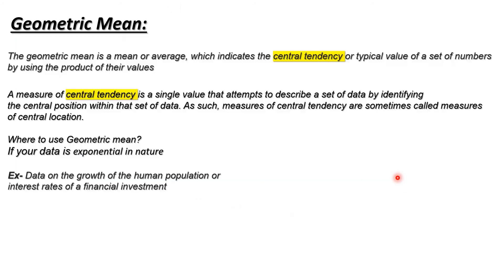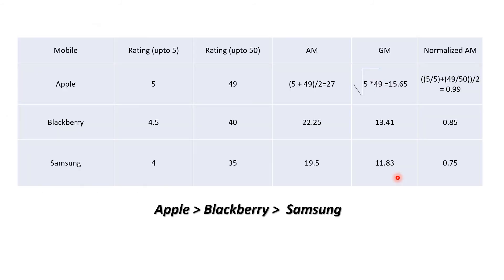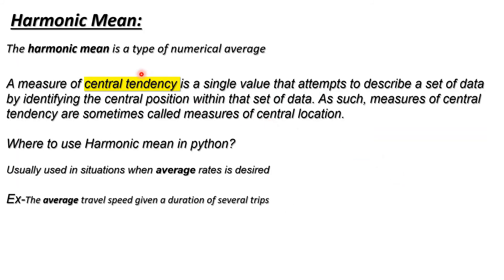Now we'll see the harmonic mean. The harmonic mean also checks the central tendency — the center point in your data set — but the way to calculate it is different from geometric mean. The harmonic mean is usually used when an average rate is desired, when you need to calculate the average rate of a particular data set.